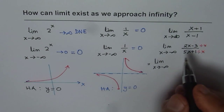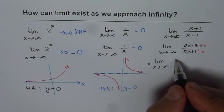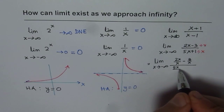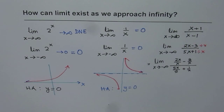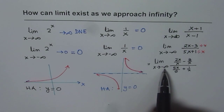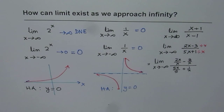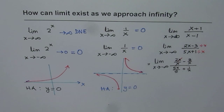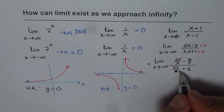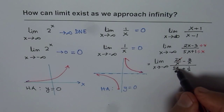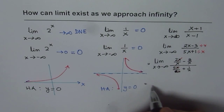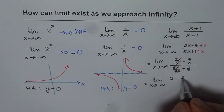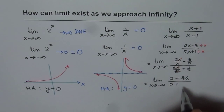After simplifying, the x's cancel. So I can rewrite this as the limit as x approaches minus infinity of the function: 2 minus 3 over x, divided by 5 plus 1 over x.